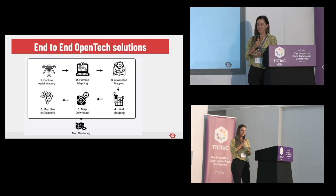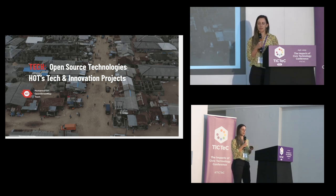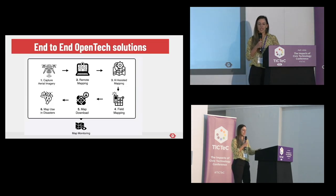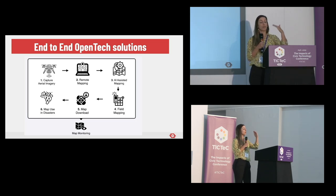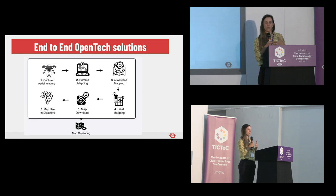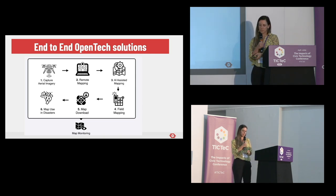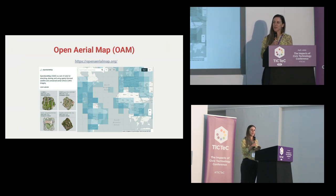A big part of what we do is the volunteers — the people joining in and adding information. As an organization we also build these technologies with our community. The main tools focus on capturing imagery so you can look at it and add information: this is a building, this is a road, this is a waterway. I'll mention an AI-assisted tool we're working on, and then once you've added that information you can do what we call field mapping — for example, in Bangladesh, once a building is added to the map, you can specify it's a hospital or add additional information that people can use.